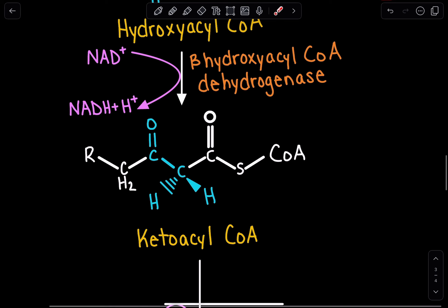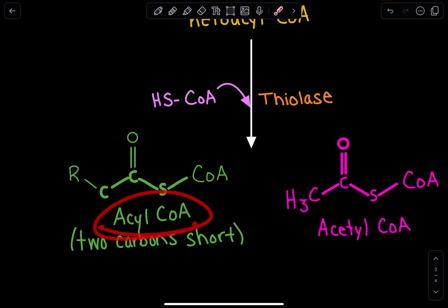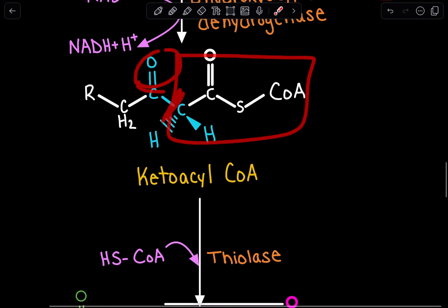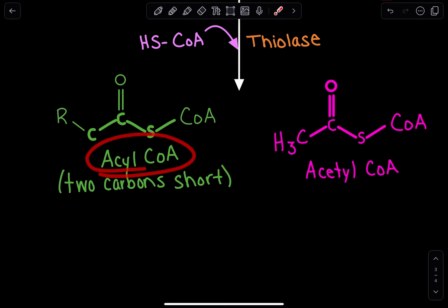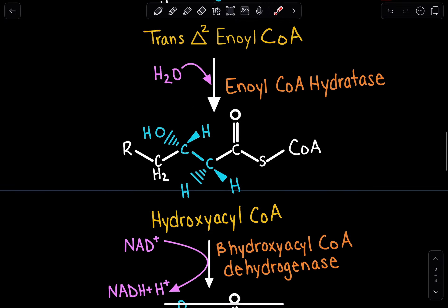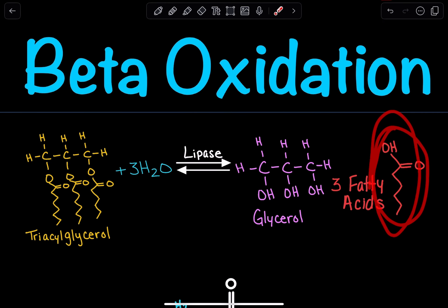The purpose of adding that carbonyl was to regenerate acyl-CoA. We cleaved off the acetyl-CoA and were left with the rest, so we had to add in a coenzyme A group to regenerate acyl-CoA — what we started with, but two carbons shorter. The whole purpose of beta-oxidation is to produce acetyl-CoA and break down the fatty acid until no carbons remain.